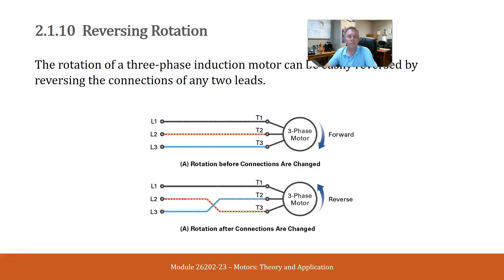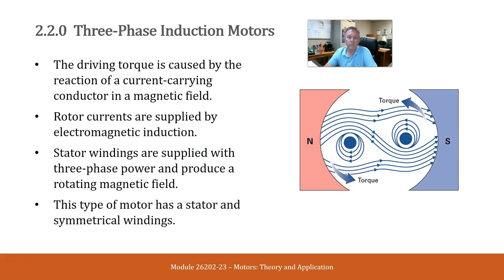Reversing rotation. The rotation of a three-phase induction motor can be easily reversed by reversing the connection of any two leads. The driving torque is caused by the reaction of a current carrying conductor in a magnetic field. Rotor currents are supplied by electromagnetic induction. Stator windings are supplied with three-phase power and produce a rotating magnetic field. This type of motor has a stator and a symmetrical winding.